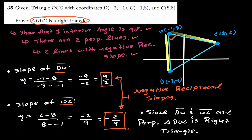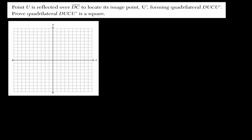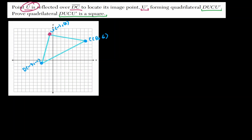In the second part of question 35, point U is reflected over line segment DC to create image point U prime, forming a quadrilateral. We want to show this quadrilateral is a square. Let's place the points: U at negative 1 comma 8, C at 8 comma 6, and D at negative 3 comma negative 1. To find U prime, we reflect U over line DC.